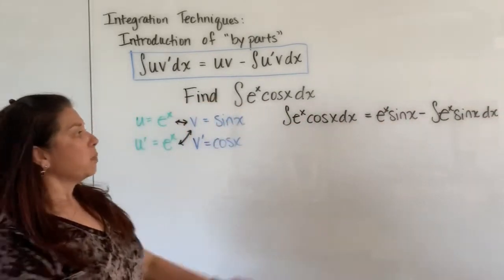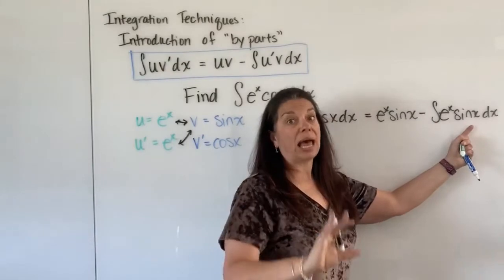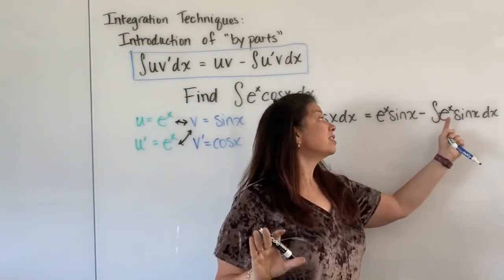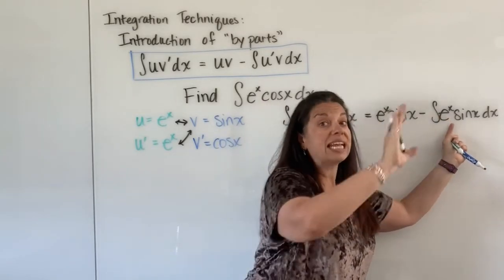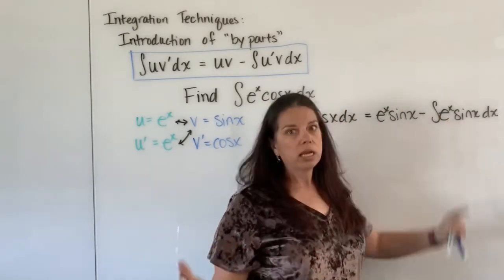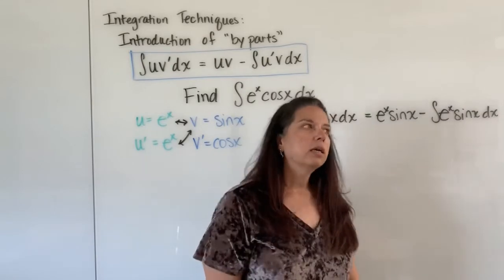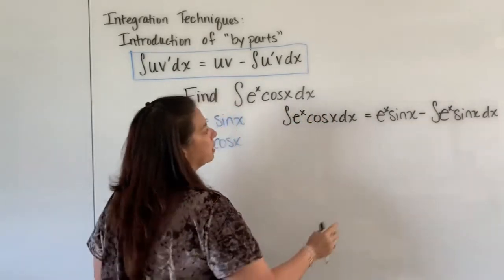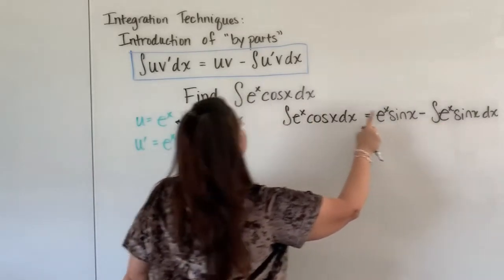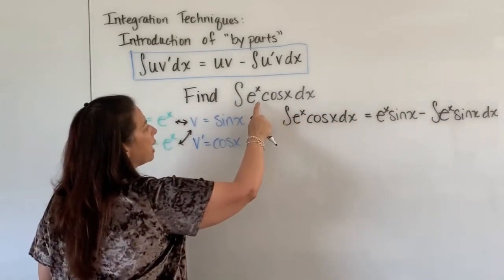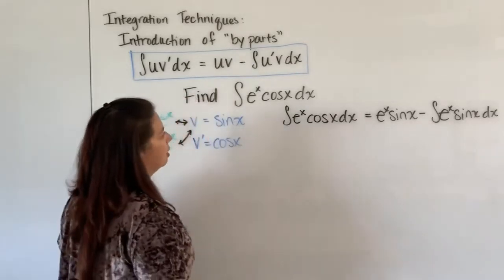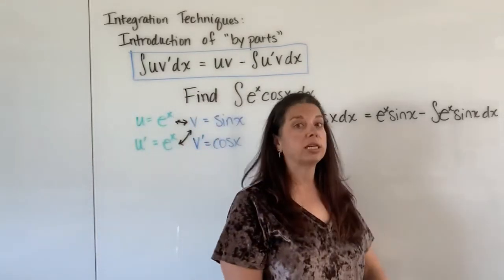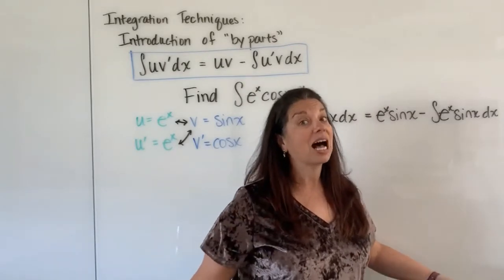Now you might be saying to yourself, hey look, these kind of match, but no, they don't because this is just e to the x sine x. This is subtracting off the integral, the anti-derivative of e to the x sine x. If you just compare and contrast for the moment, e to the x sine x is not too far different from what I actually started with, e to the x cosine x. We'll deal with that in just a second. But right here, my only option is to do by parts again.